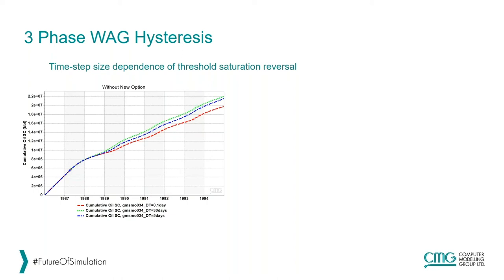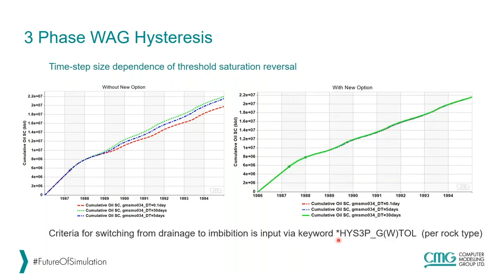We wanted to remove this time step dependency, which is present in all simulators. The solution is this keyword in the GEM simulator — for the gas phase we have 'G', for the water phase 'W'. This essentially allows us to remove the time discretization variation that's caused or seen significantly in WAG processes through the reservoir simulator. For more details, please refer to this particular keyword.